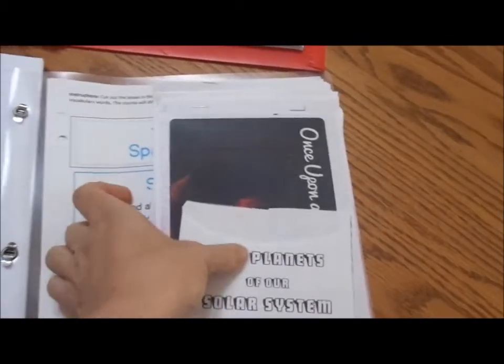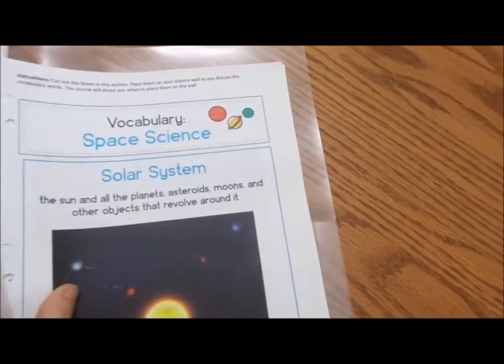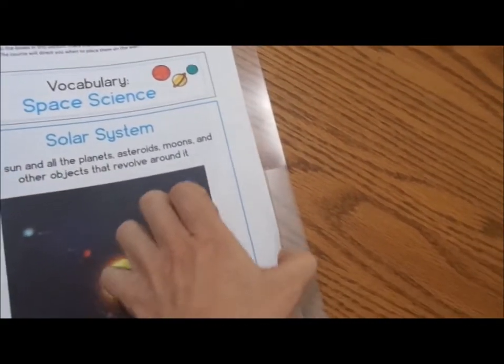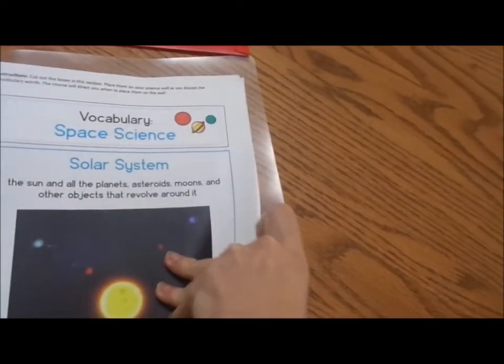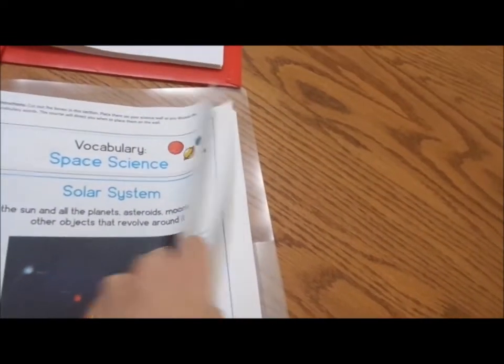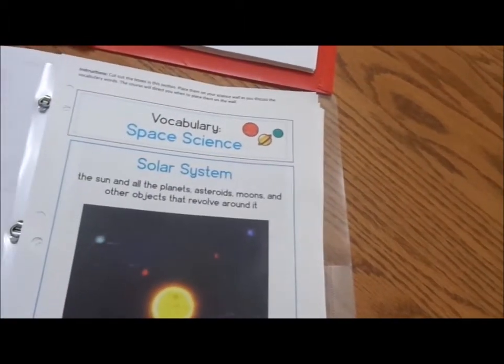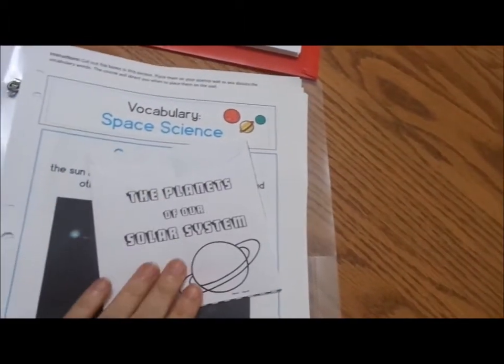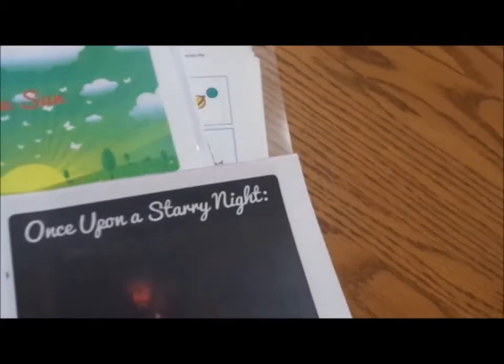Included in each lesson are vocabulary words. A lot of people will cut these out, laminate them, and make a word wall with them. As I said, our kitchen is what we use for our school room, so we do not make the word walls. The planets of our solar system go with another activity, and there are also several mini books.